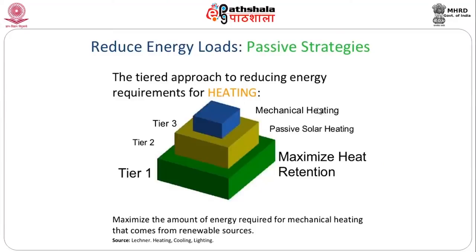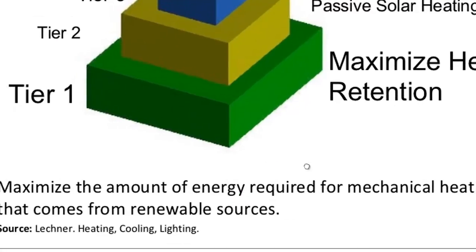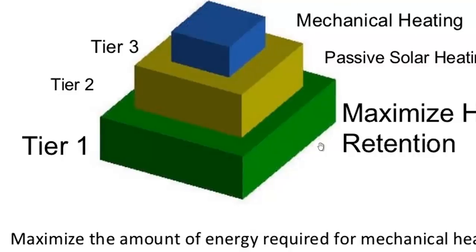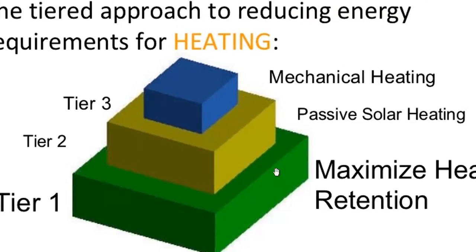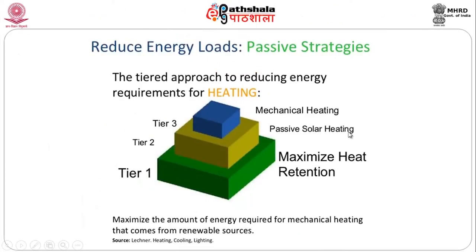How do you reduce different energy loads using passive strategies? Again, we have a three-tiered approach. The first tier is to maximize heat retention — how can you retain heat in the building when required. Second is passive solar heating — how do you use solar energy to heat up the building. Third is mechanical heating, which uses fuel-consuming heating devices. We need to maximize the amount of energy required for mechanical heating that comes from renewable resources. If we concentrate on heat retention and passive solar heating, mechanical heating will automatically take a backseat.